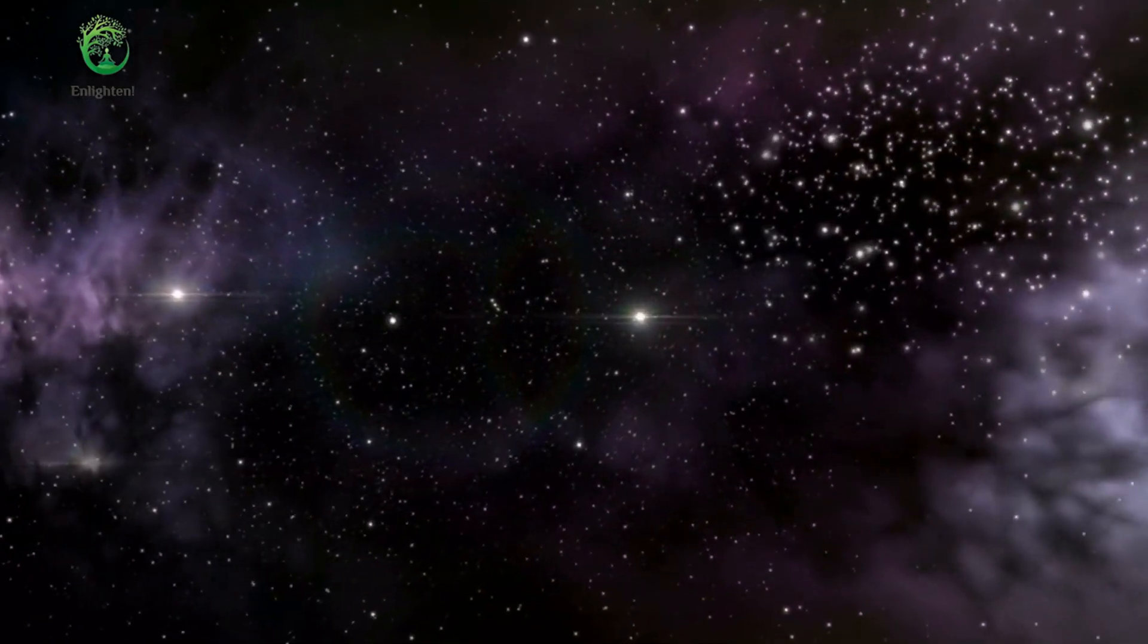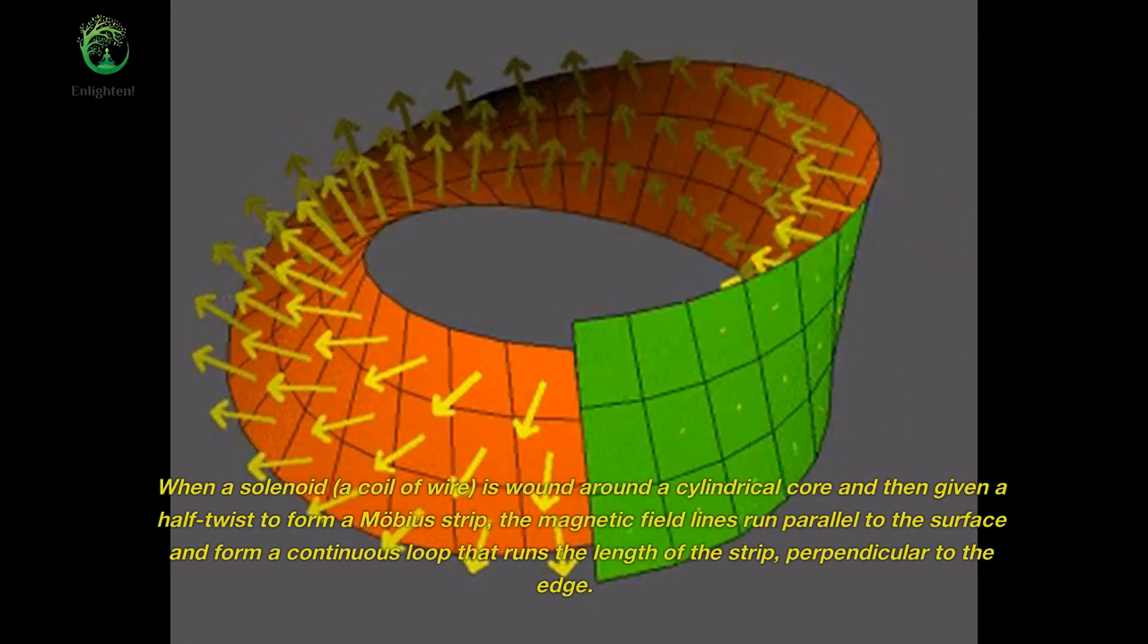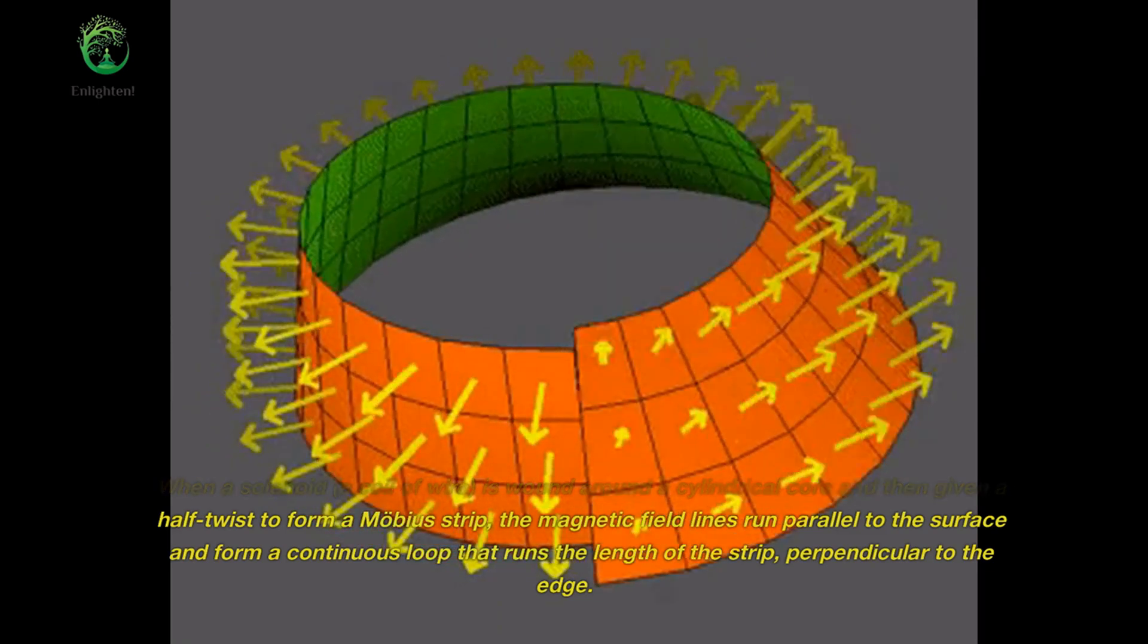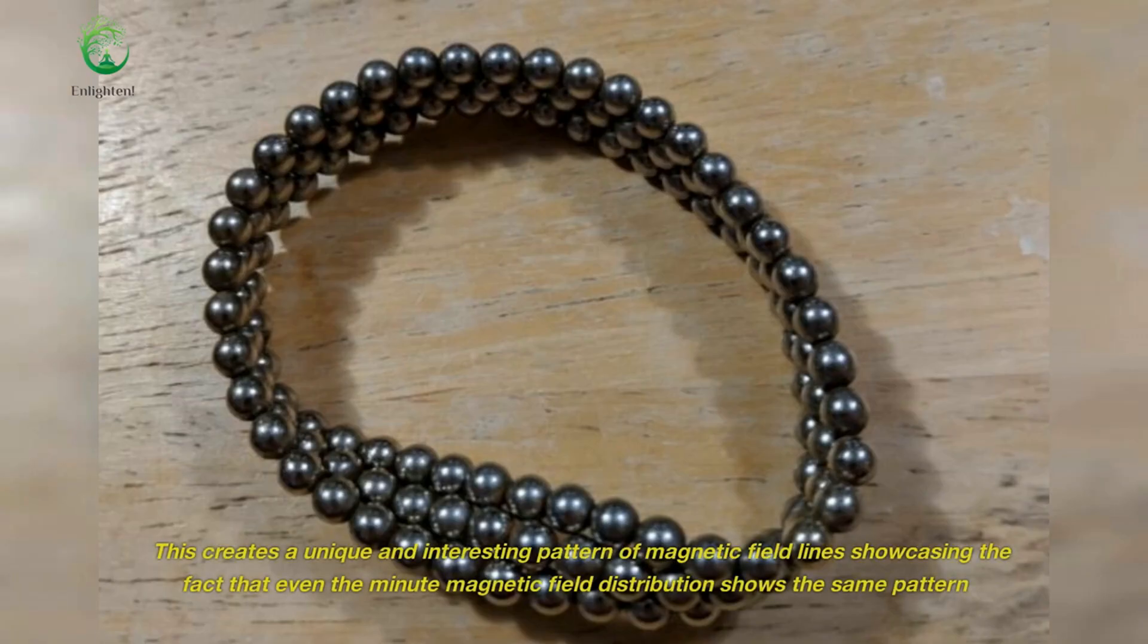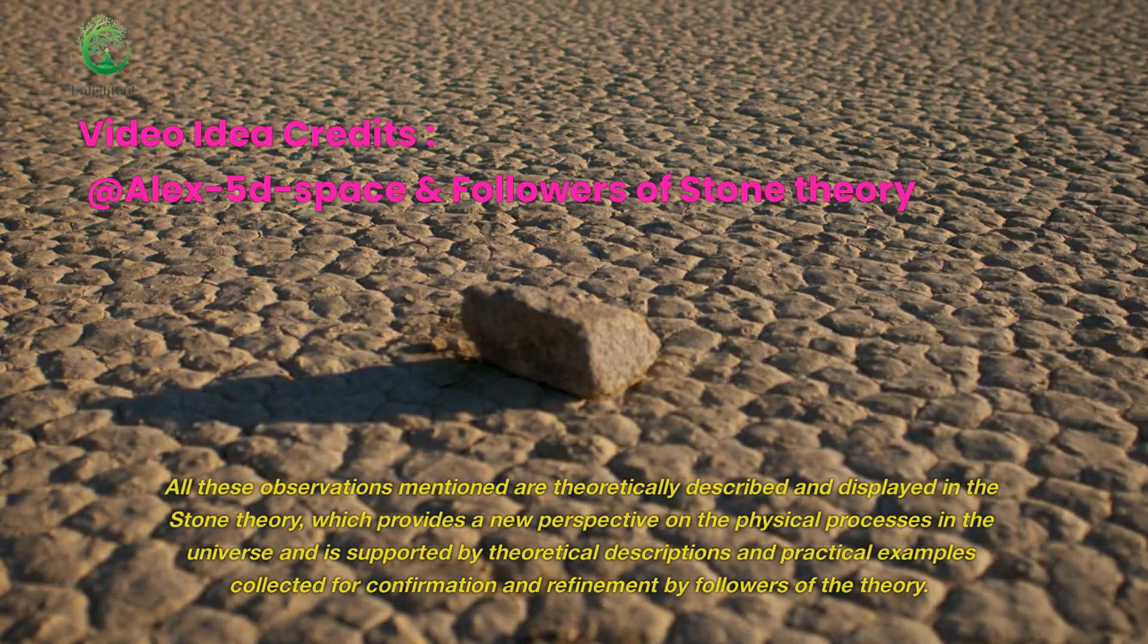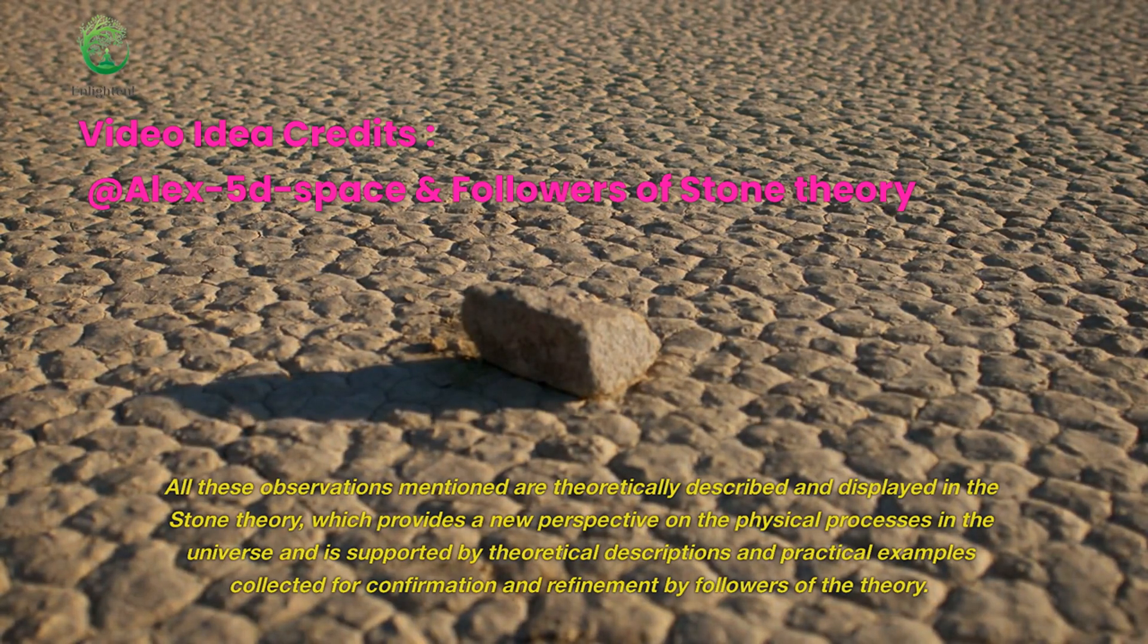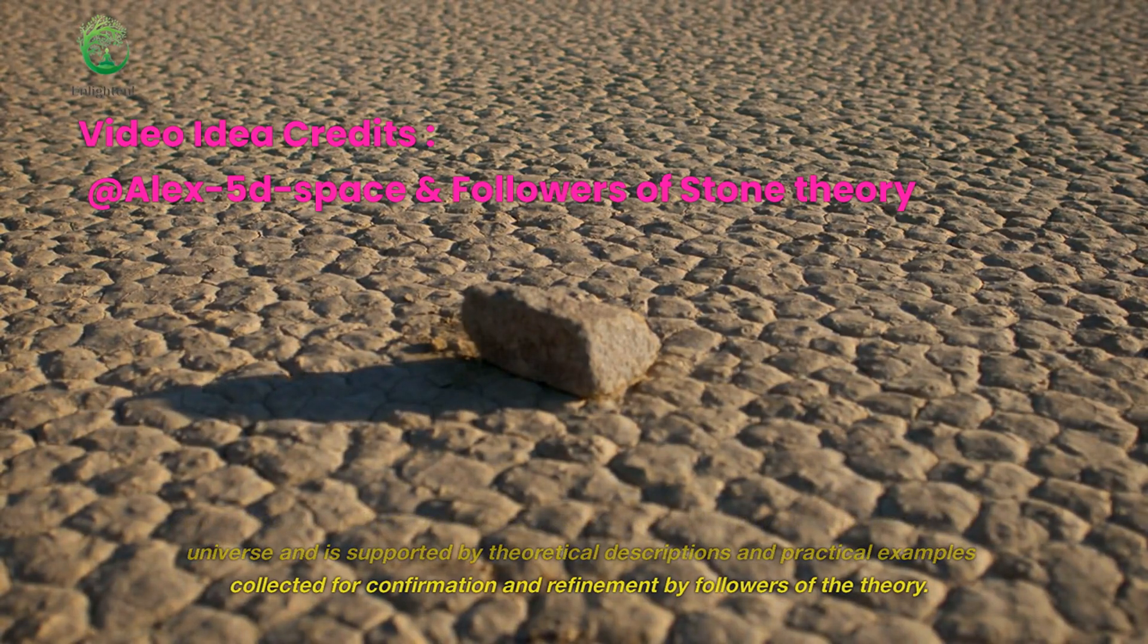When a solenoid, a coil of wire, is wound around a cylindrical core and then given a half-twist to form a Mobius strip, the magnetic field lines run parallel to the surface and form a continuous loop that runs the length of the strip, perpendicular to the edge. This creates a unique and interesting pattern of magnetic field lines showcasing the fact that even the minute magnetic field distribution shows the same pattern. All these observations mentioned are theoretically described and displayed in the stone theory, which provides a new perspective on the physical processes in the universe and is supported by theoretical descriptions and practical examples collected for confirmation and refinement by followers of the theory.